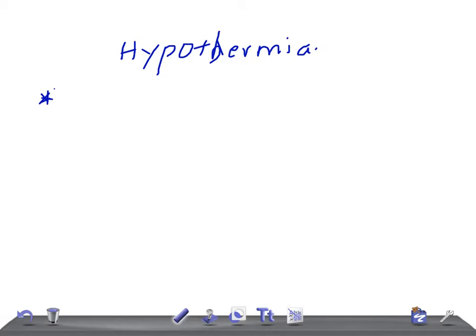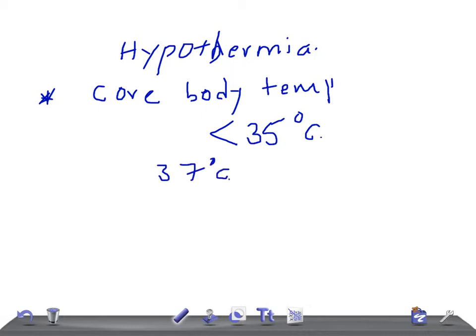When is a patient hypothermic or suffering from hypothermia? Remember, the core body temperature, if the core body temperature is below 35 degrees Celsius. The normal body temperature is around 37 degrees Celsius. So if it's below 35, it's known as hypothermia.